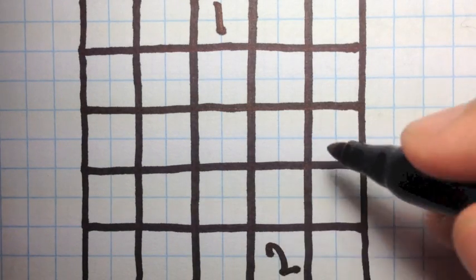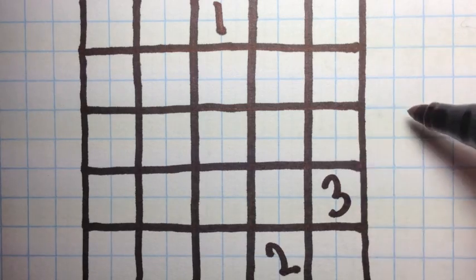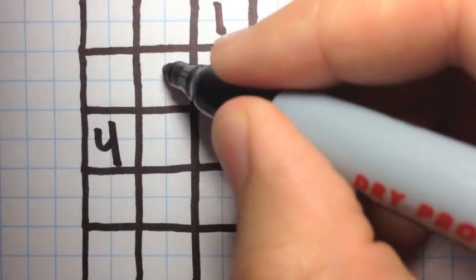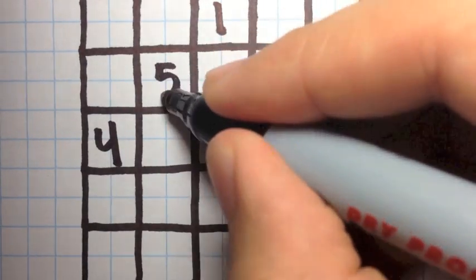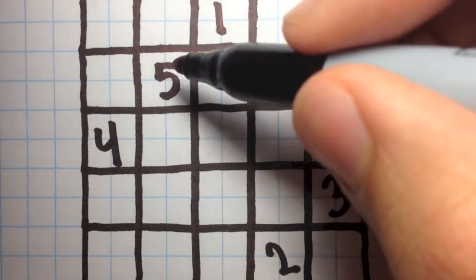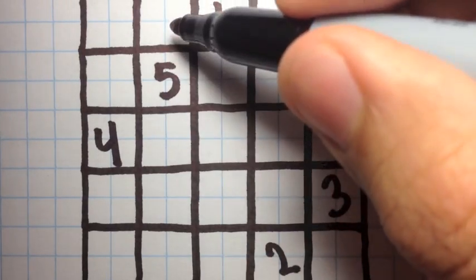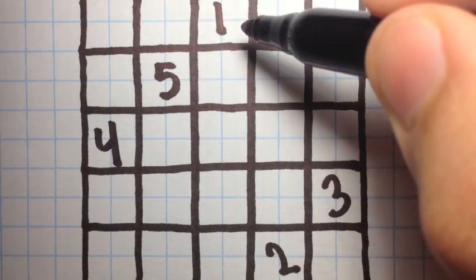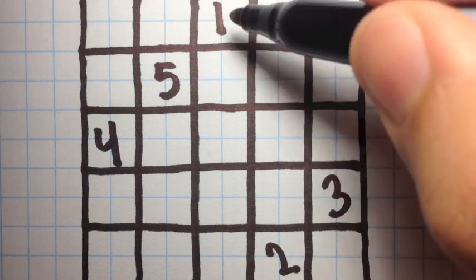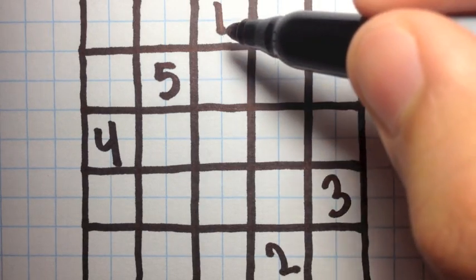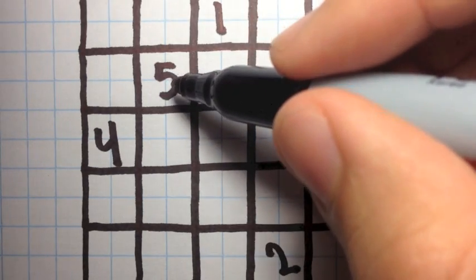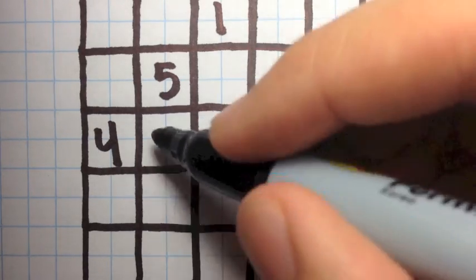So up one, right one. Up one, right one. Up one, right one. Up one, to the right one. And now we're in a spot where if we go up one and to the right one, there's already a number there.